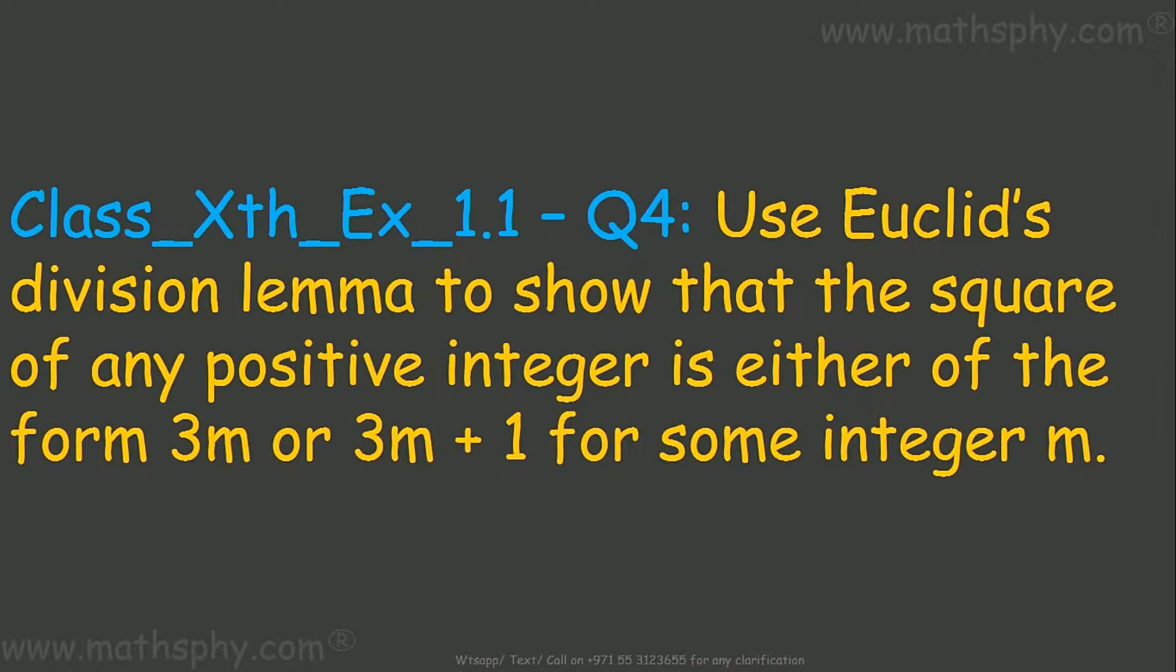This question says use Euclid's division lemma to show that the square of any positive integer is either of the form 3m or 3m plus 1 for some integer m.